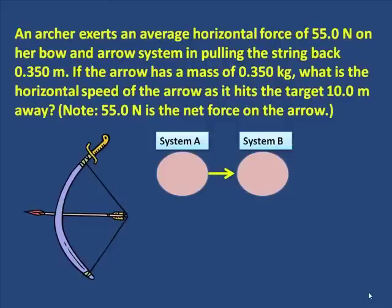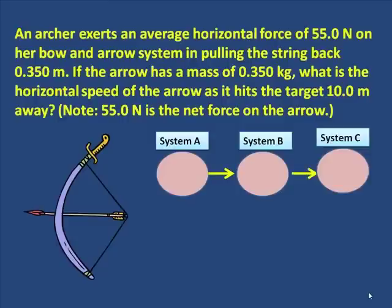Now it's hard to keep that arrow in place. It's like holding a heavy rock above the earth. The rock wants to fall down, and here the string wants to be released. And when you do release it, the bow and arrow system does work on the arrow.